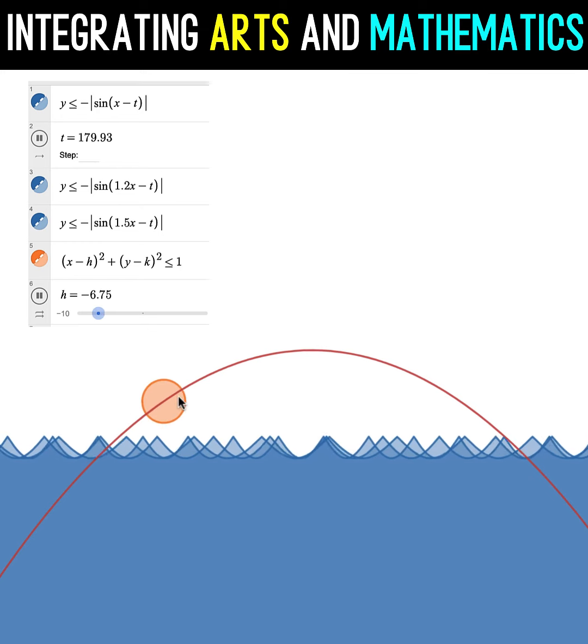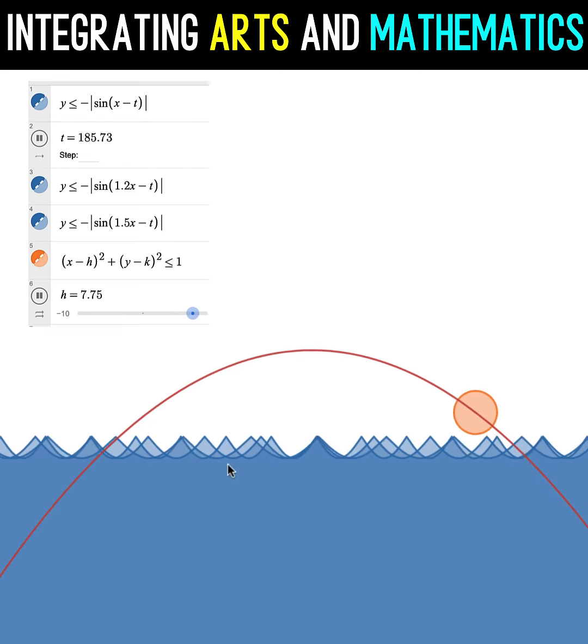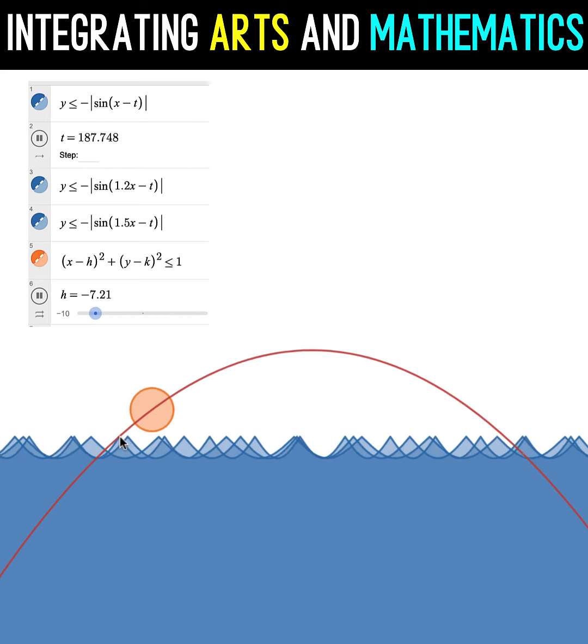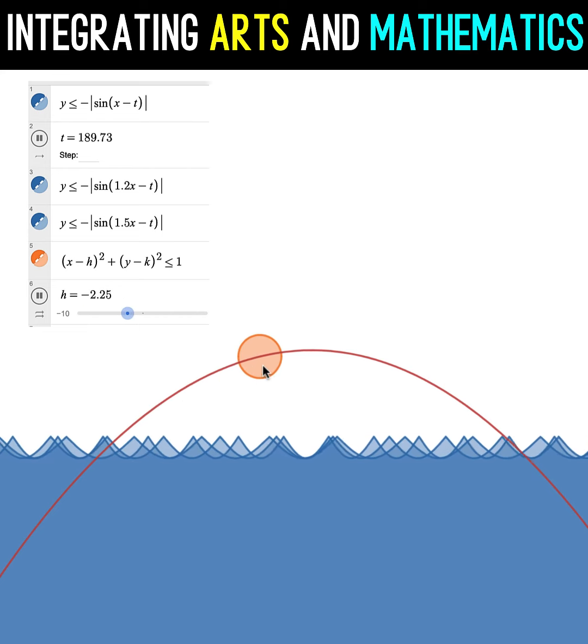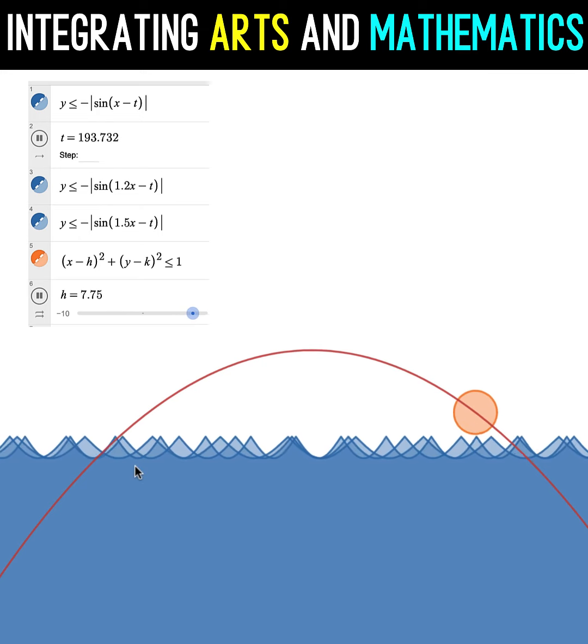So we have here a parabolic shape. We are going to follow this shape as the sun is setting down while the waves are also moving. So how are we going to create this animation using mathematical functions? Let's begin our animation problem.